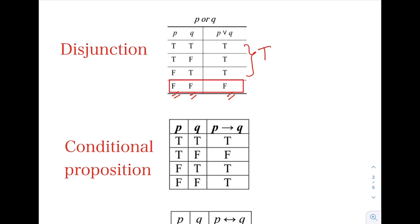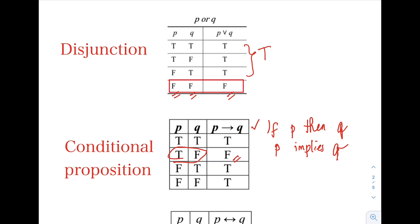Next is the conditional proposition. The symbol → represents the conditional proposition 'if P then Q', or equivalently 'P implies Q'. As you notice in the table, the only false statement is the combination where P is true and Q is false. If P is true and Q is false, then the conditional proposition is false. The rest are true.